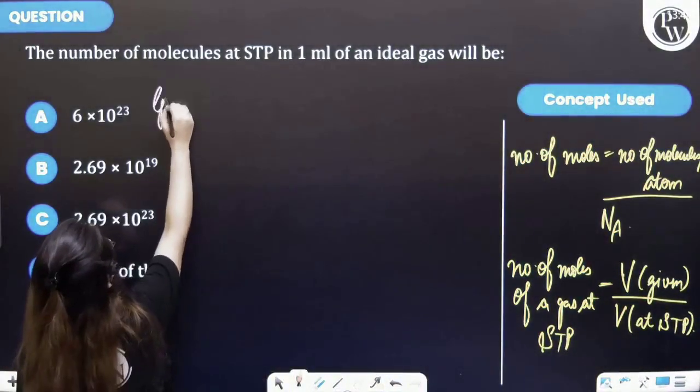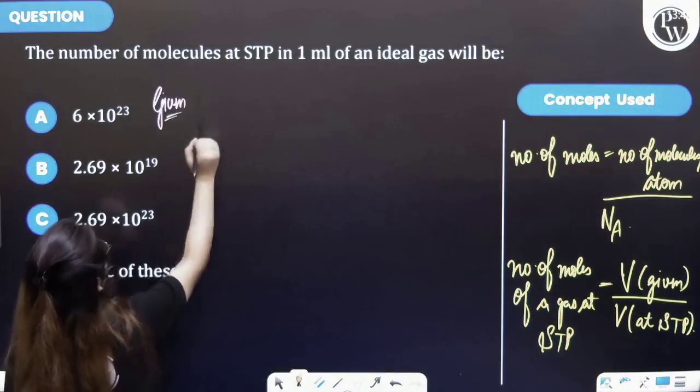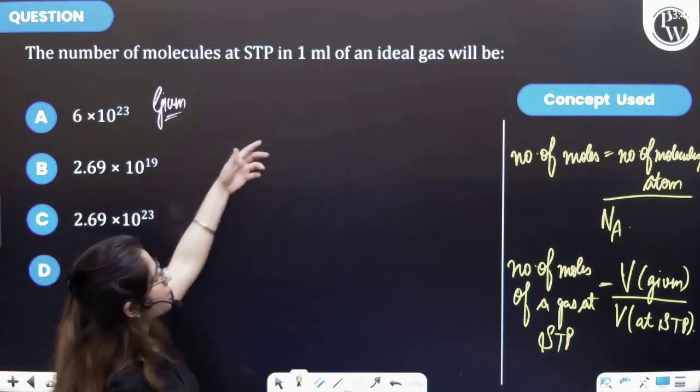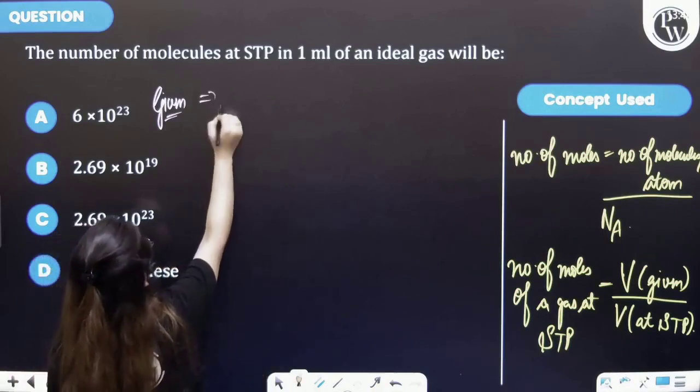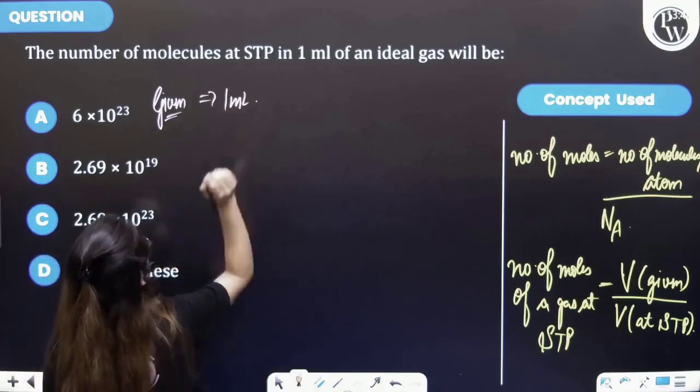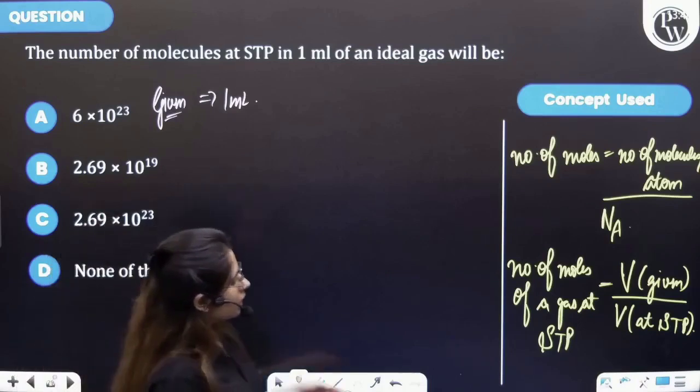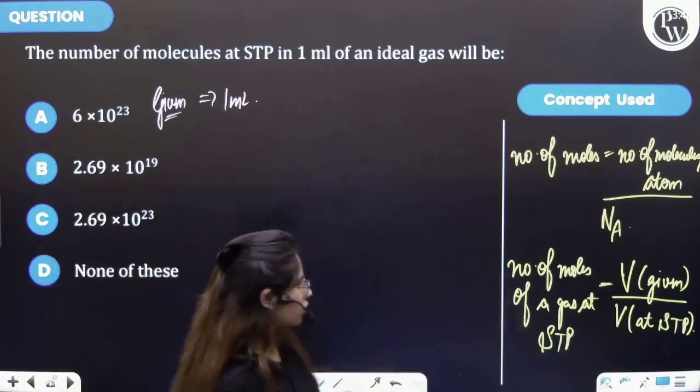In question it is given that we are having at STP 1 ml of an ideal gas. Now let's try to find the number of moles of a gas at STP.